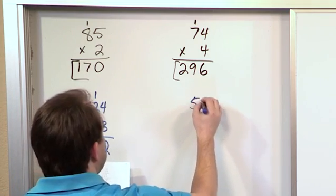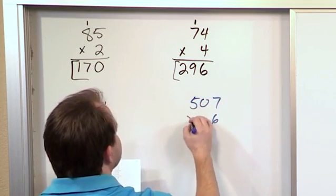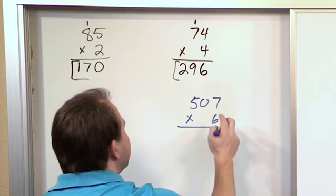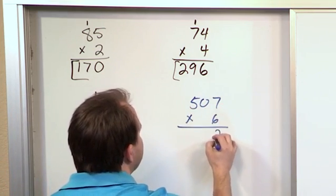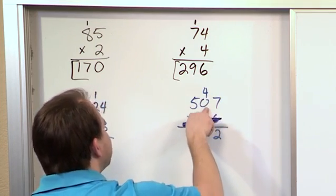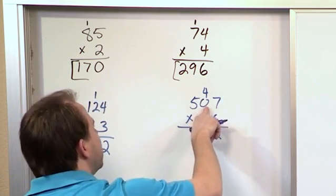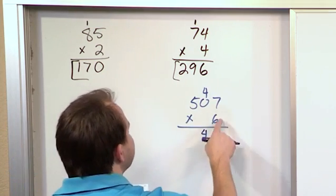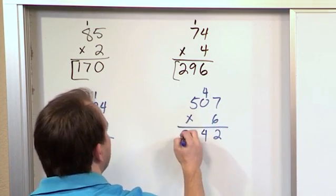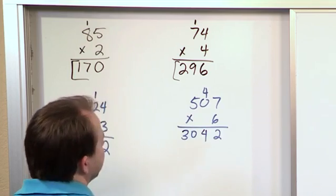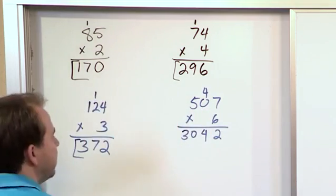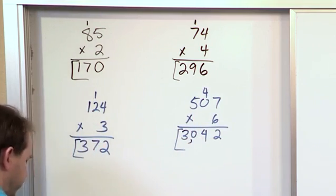Now we'll do another 3 digit, 507 times 6. We start on the right-hand side. 6 times 7 is 42. We can't write the whole thing down, so we put a 2 and carry a 4. 6 times 0 is 0, plus the 4 just gives us the 4 down here. And then 5 times 6, we can write the whole 30 down there, because there's nothing else to carry to. So when we're done with that, we get 3042. That's the final answer.